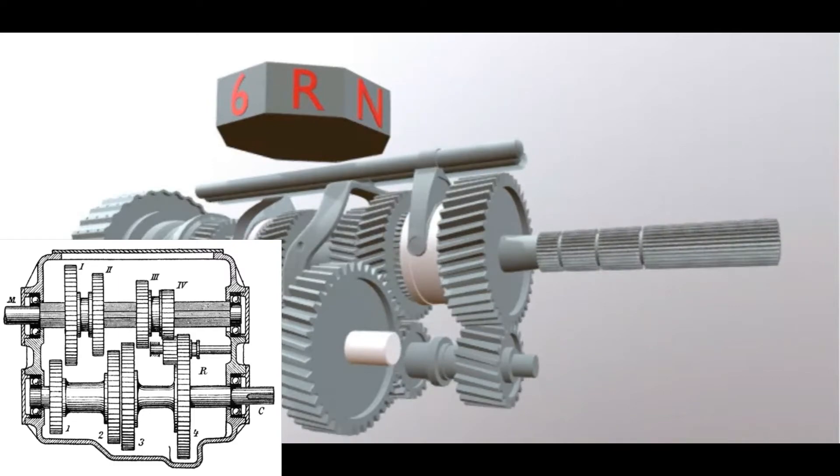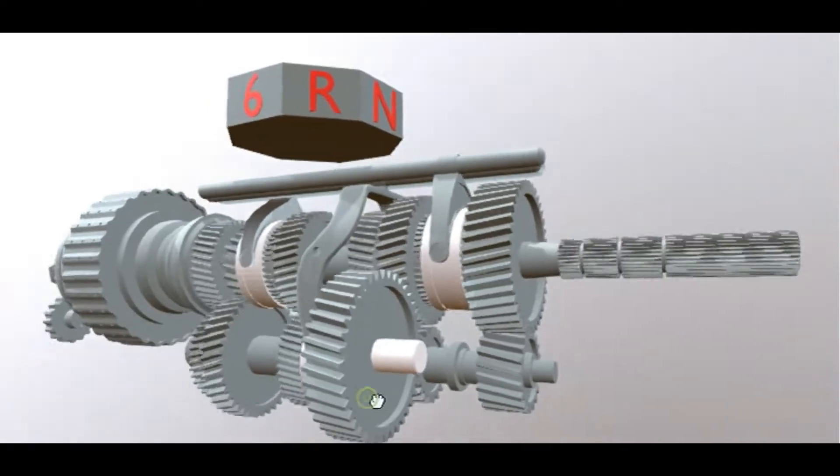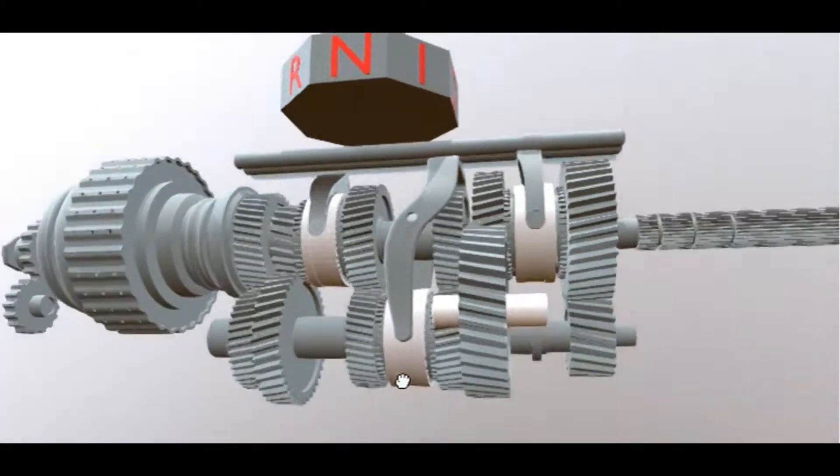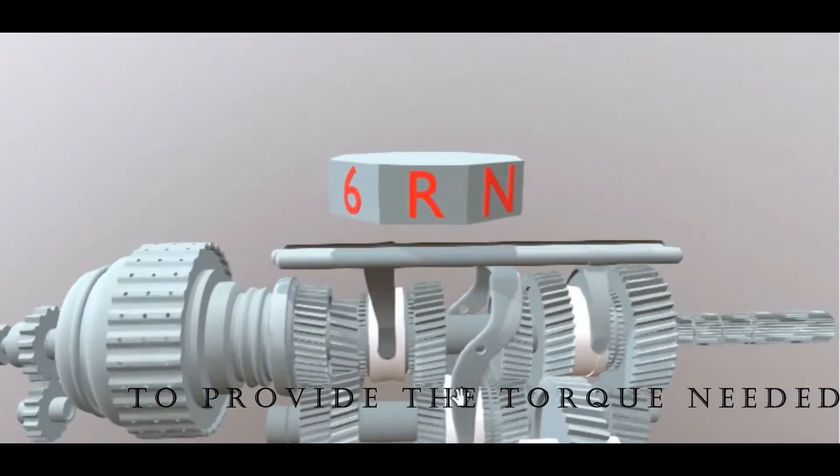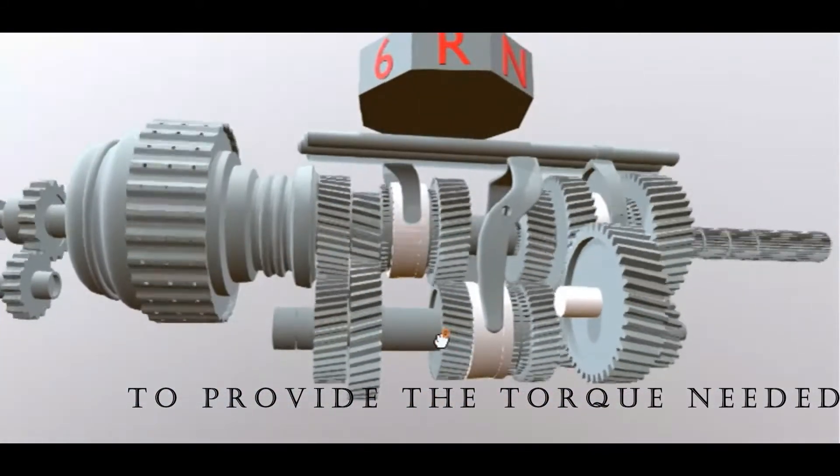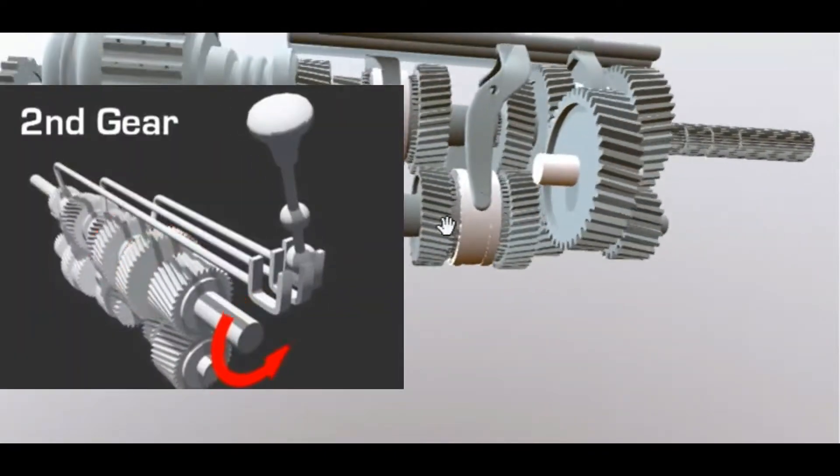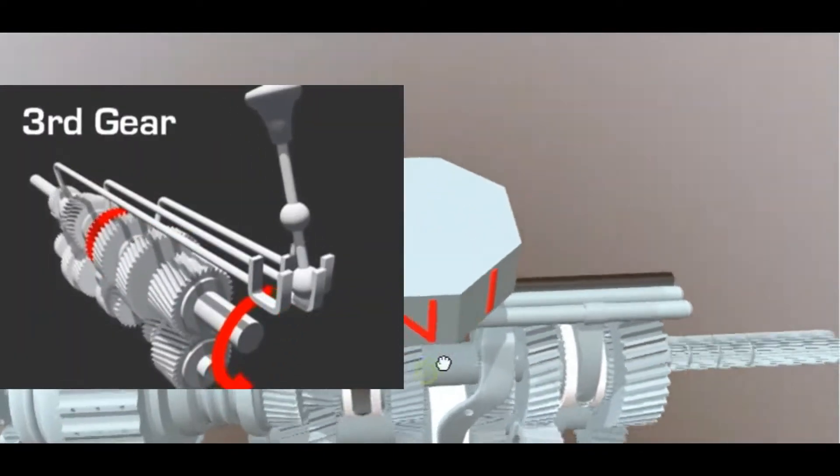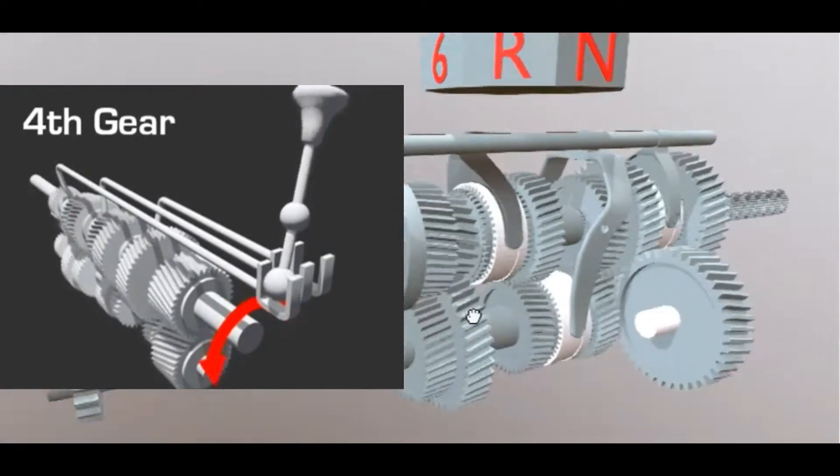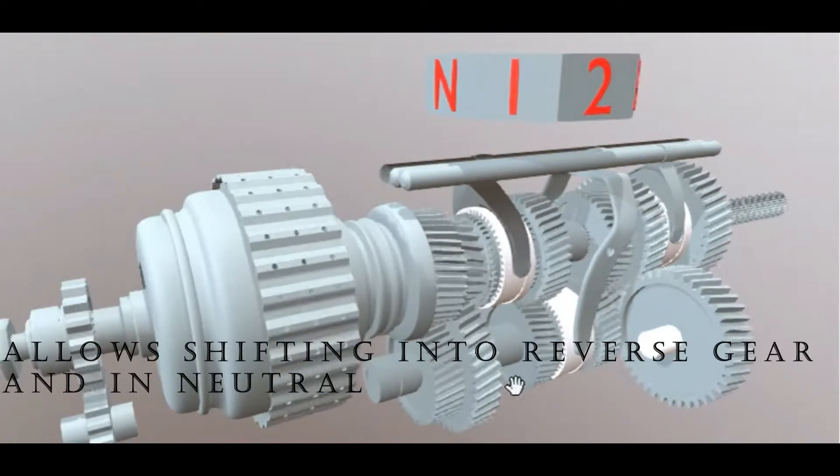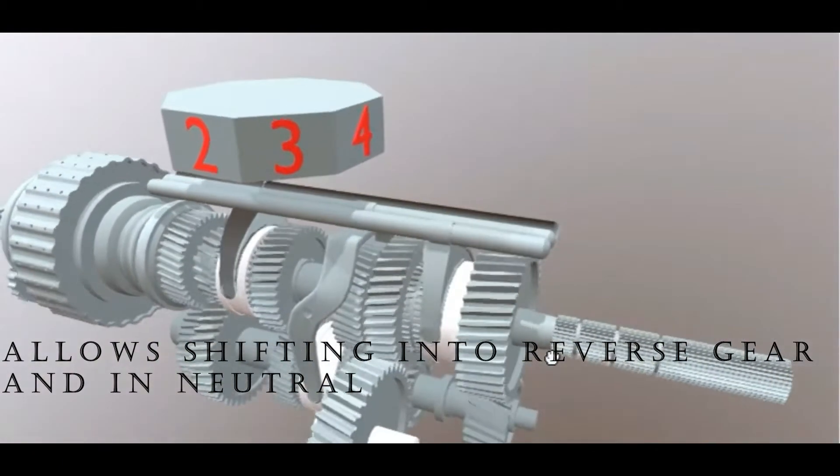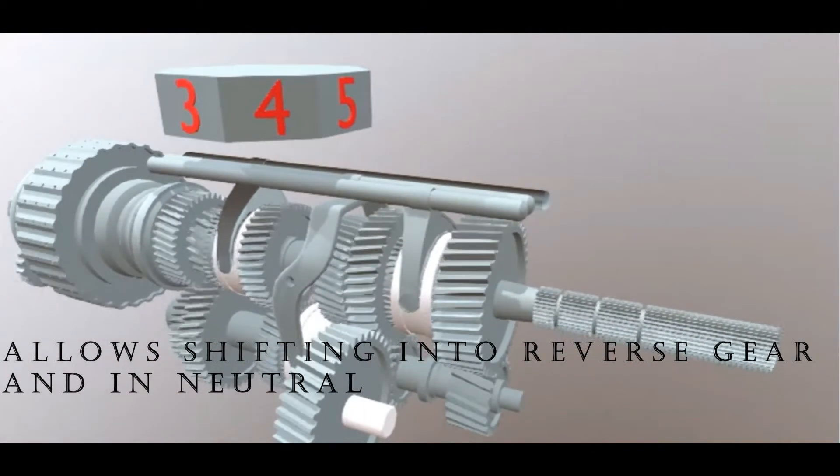Main functions of a gearbox are as follows: it provides the torque needed to move the vehicle under a variety of road and load conditions. It does this by changing the gear ratio between the engine crankshaft and vehicle drive wheels. Gearbox allows shifting into reverse so the vehicle can move backward, and allows shifting into neutral for starting the engine.